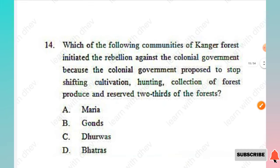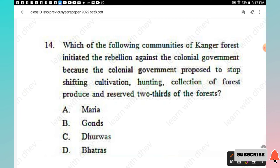Question 14: Which community of Jharkhand forest initiated a rebellion against the colonial government because the government proposed to stop shifting cultivation, hunting, collection of forest produce, and reserved two-thirds of the forest? Options: Mariya Gonds, Durvas, Batras. The right answer is Option C, Durvas.